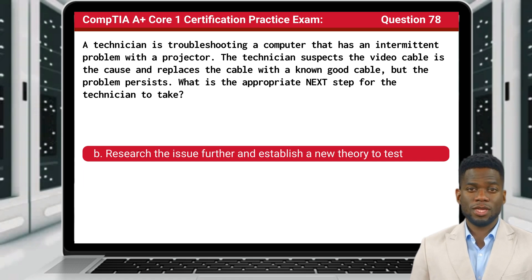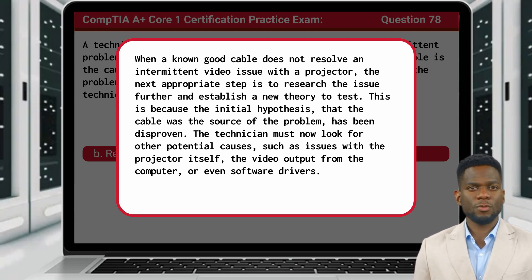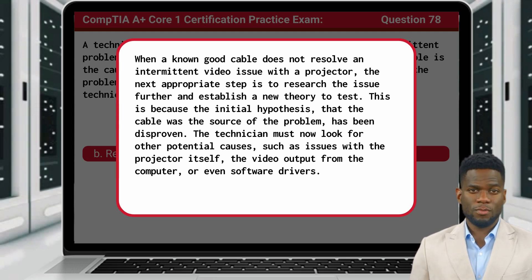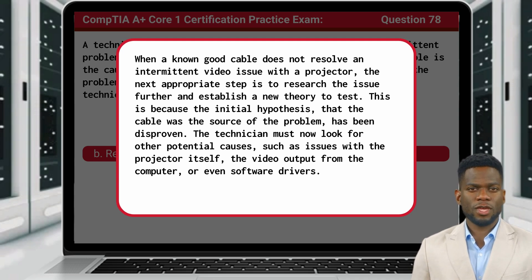The answer is B: Research the issue further and establish a new theory to test. When a known good cable does not resolve an intermittent video issue with a projector, the next appropriate step is to research the issue further and establish a new theory to test. This is because the initial hypothesis — that the cable was the source of the problem — has been disproven. The technician must now look for other potential causes, such as issues with the projector itself, the video output from the computer, or even software drivers.